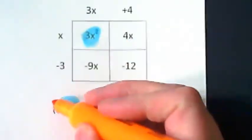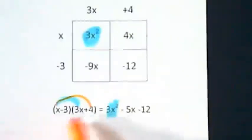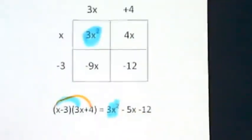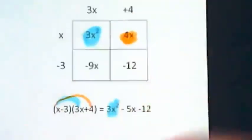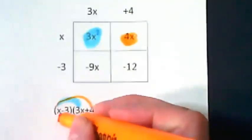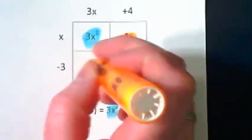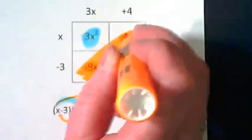When I look at this outer, it is x times 4. x times 4 shows up in here right here. And then this negative 3 and positive 3x becomes this negative 9x. And let's connect those because those go together.